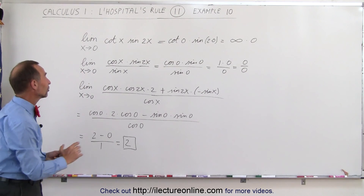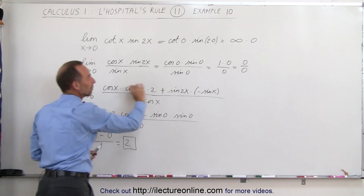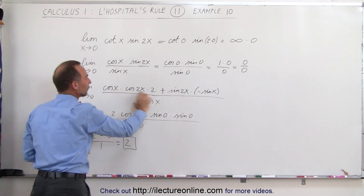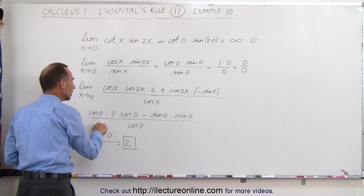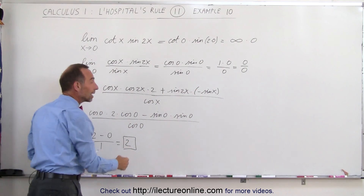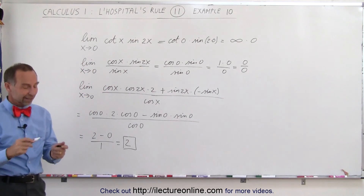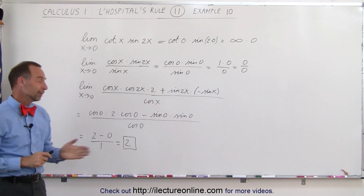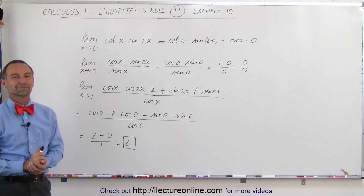As long as we change it from this form to that form, take the derivative of the numerator, take the derivative of the denominator, then evaluate the limit, we get the proper limit for the function. L'Hôpital's rule to the rescue, and this is how we do that.